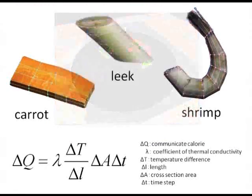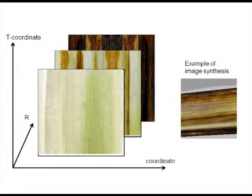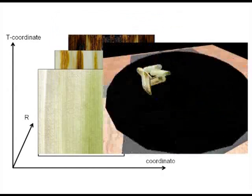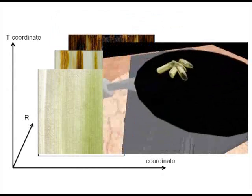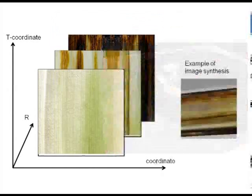The texture is partially changed based on the heating and moisture condition corresponding to each node. The heat also causes loss of moisture and shrinking of the food ingredients.